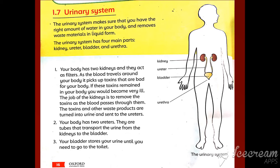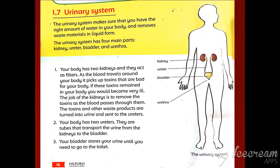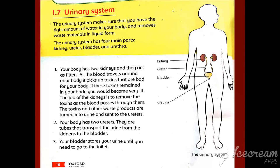The job of the kidneys is to remove the toxins as the blood passes through them. The toxins and other waste products are turned into urine and sent to the ureters.